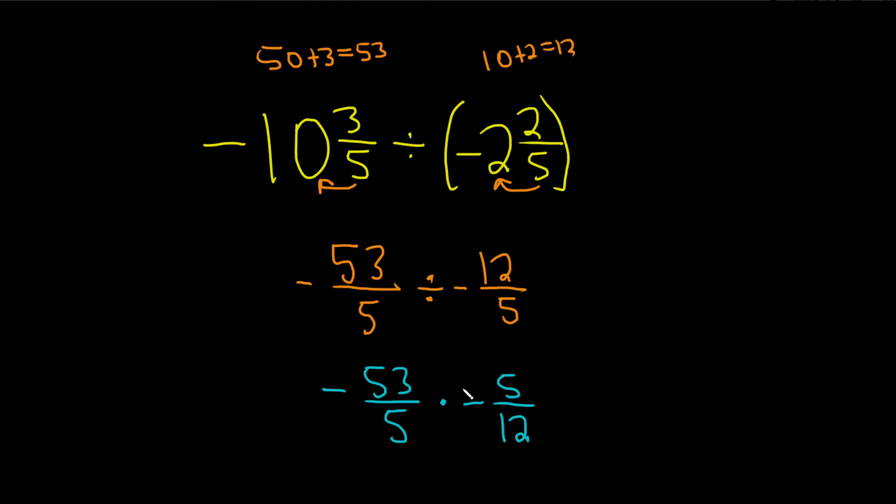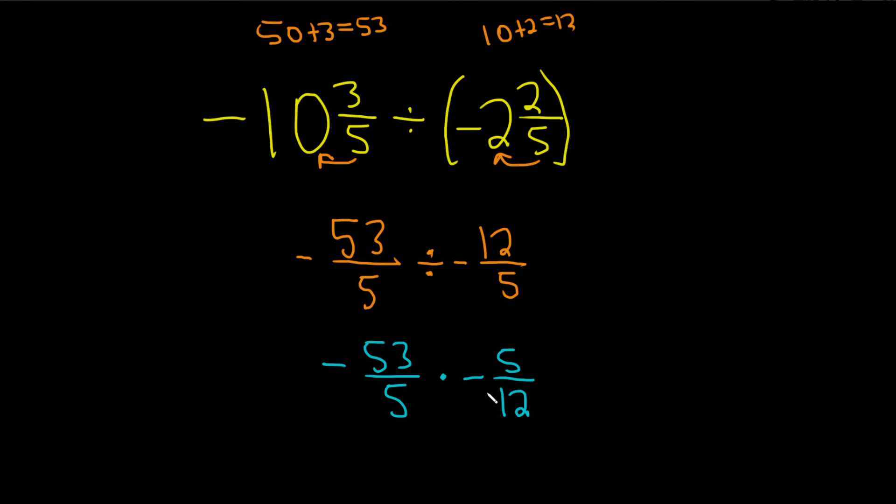Now we're ready to look for terms that cancel. Numbers on top are allowed to cancel with numbers on the bottom. Nothing works for 53 and 12, but these 5s are the same, so we can cancel them. 5 goes into 5 one time, so you draw a line through it and put a 1. Then multiply straight across: 53 times 1 equals 53, and 1 times 12 equals 12.